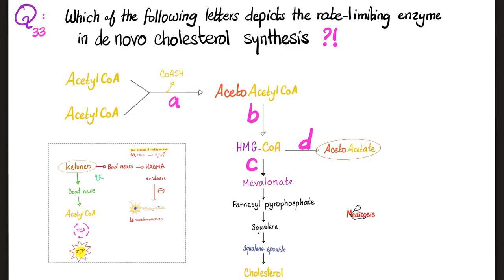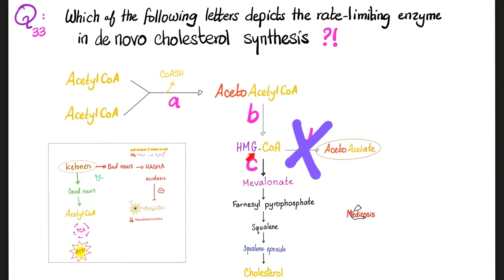Let's start by answering the question of the previous video. Which of the following letters — A, B, C, or D — depicts the rate-limiting enzyme in the de novo cholesterol synthesis pathway? Cholesterol is here. If I want to make cholesterol, it makes sense that C is in the pathway of making cholesterol. The answer cannot be D because D is in a totally different pathway. I know that the key rate-limiting enzyme in the de novo cholesterol synthesis is HMG-CoA reductase, not HMG-CoA synthase. HMG-CoA synthase is B, but HMG-CoA reductase is C, so the correct answer is C.